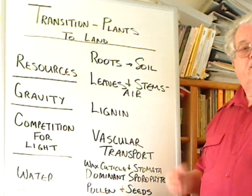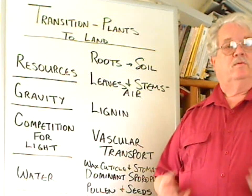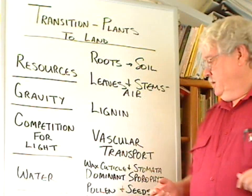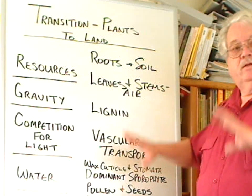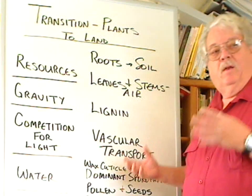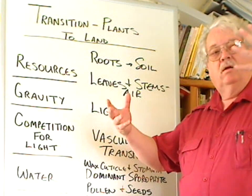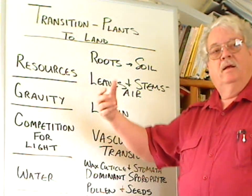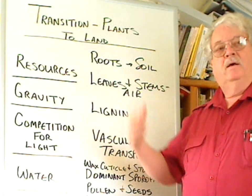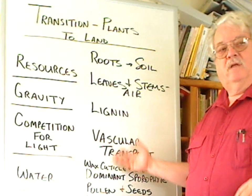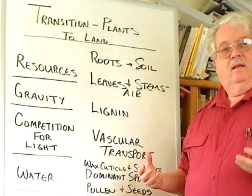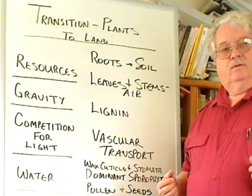Seeds are adapted to withstand drought and then, once moistened again, to begin to sprout. All this ties together to allow a plant that can be tall, can gather lots of sunlight, can transport materials between its roots and stems and leaves, can withstand drought, and can adapt to a wide variety of land situations.